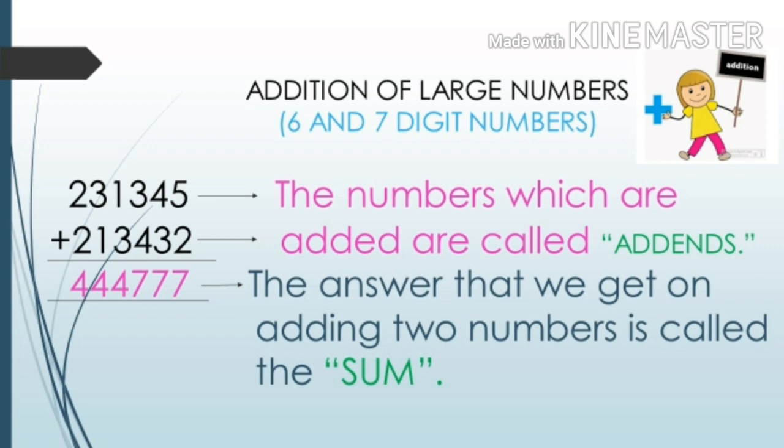In terms ko hum example ki madad se samjhenge. Example dekhiye. 231345 mein 213432 ko add kiya gaya hai, jis se sum aya hai 444777.